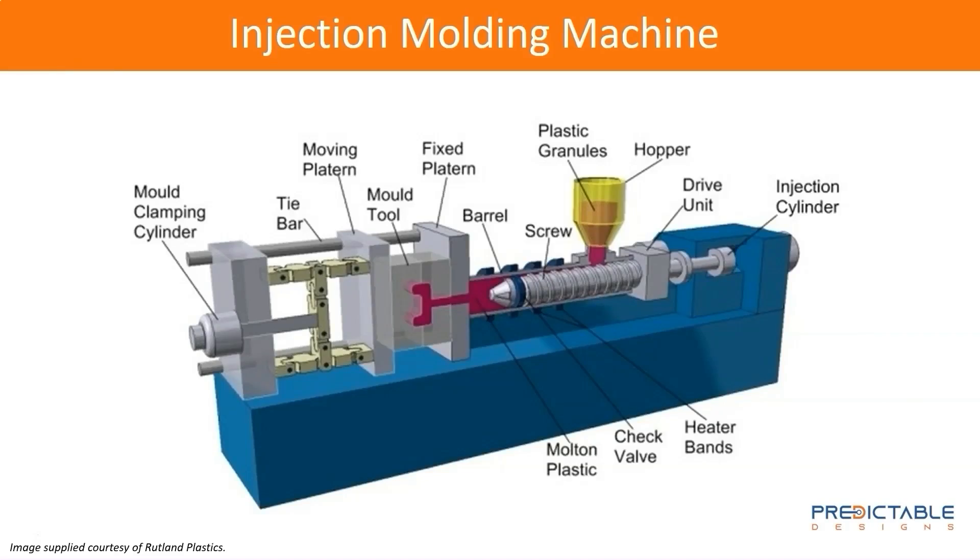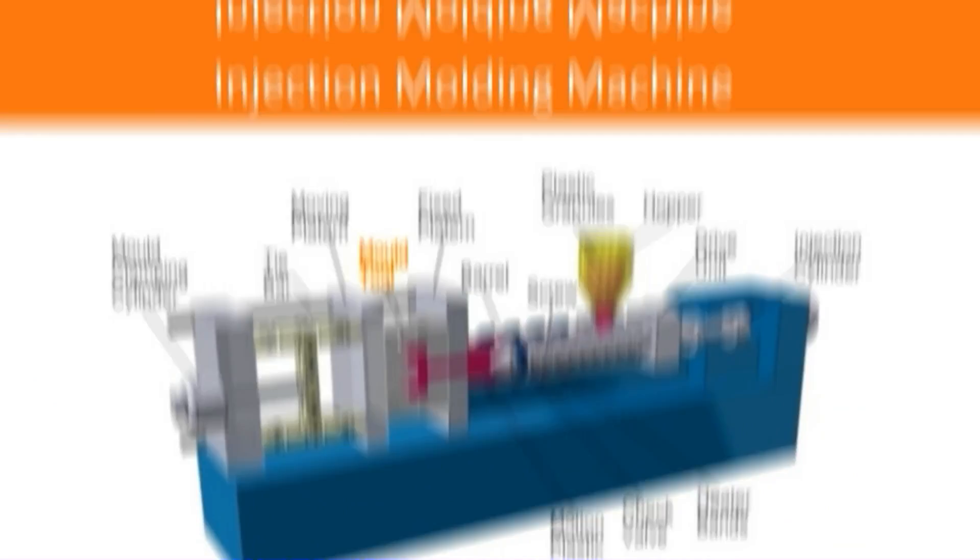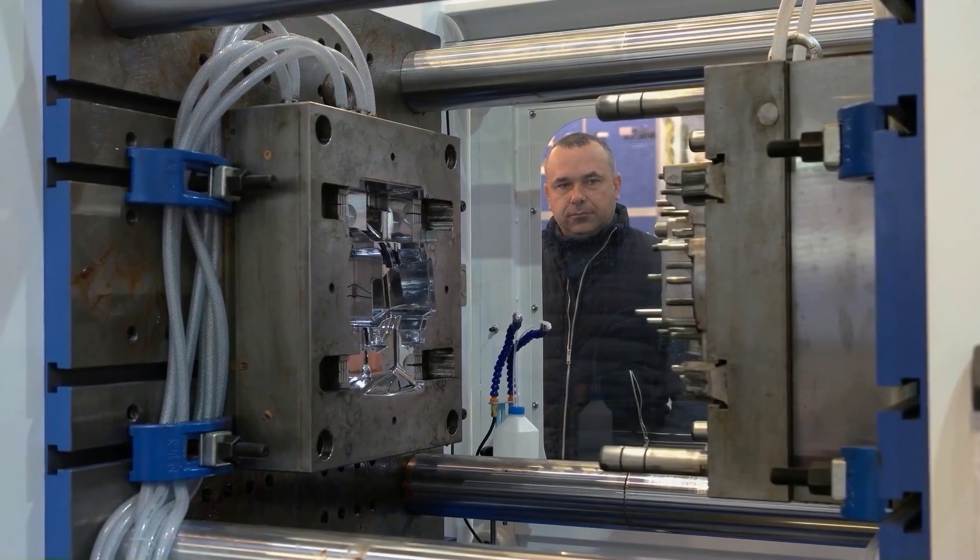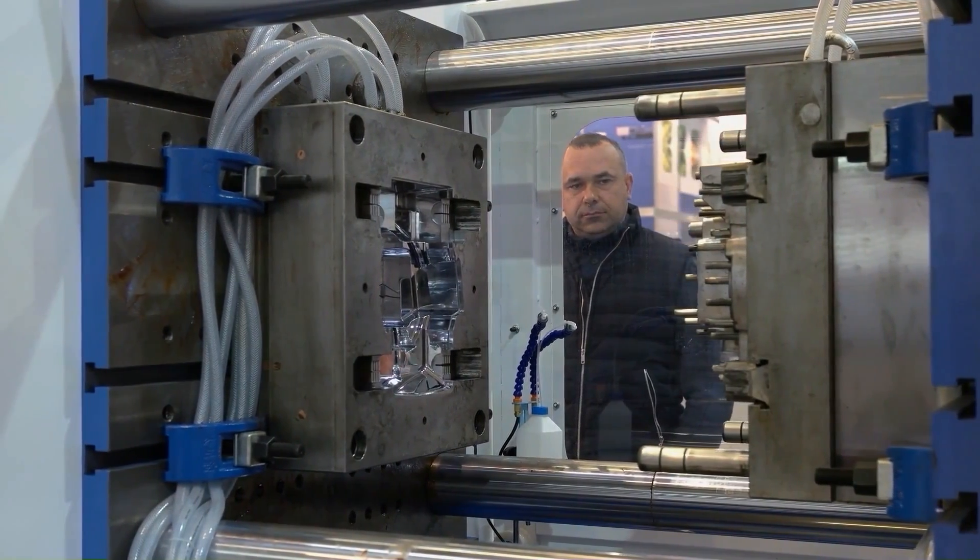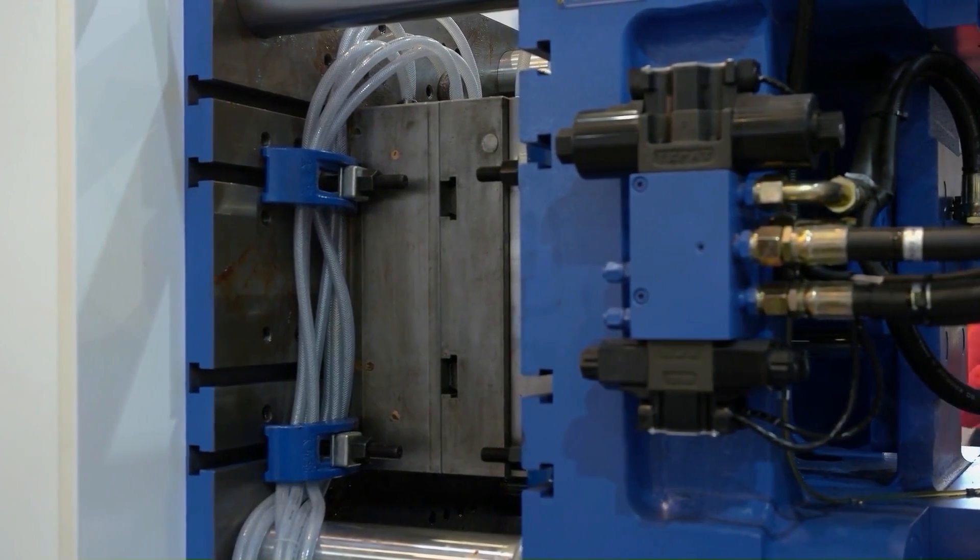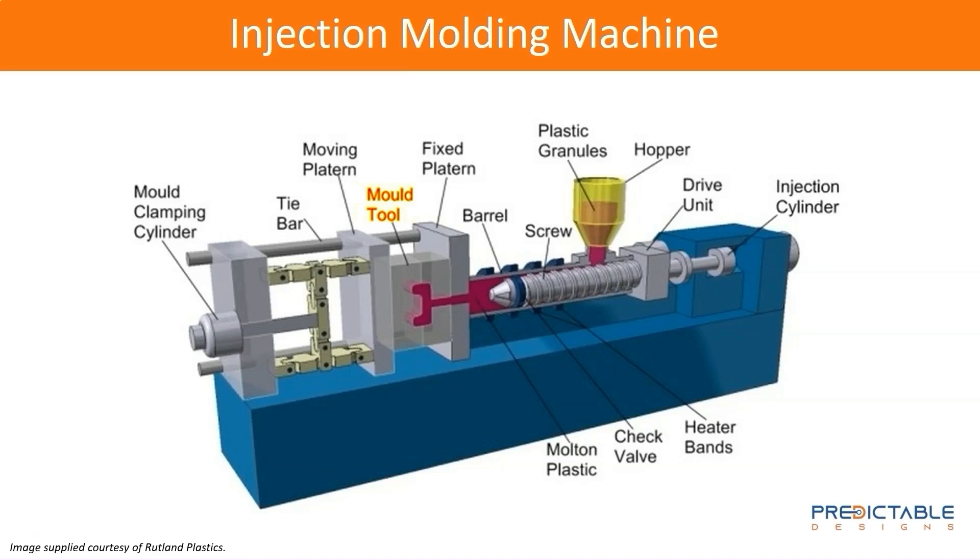This is a graphic illustration of an injection molding machine. Injection molding starts with a mold, which is two metal pieces that come together. Inside of these two metal mold pieces, it forms a cavity. Molten plastic is injected into that cavity. It solidifies, the mold is opened, and out comes a plastic part in the shape of the cavity in that mold. This illustration shows you some of the basics of an injection molding machine.